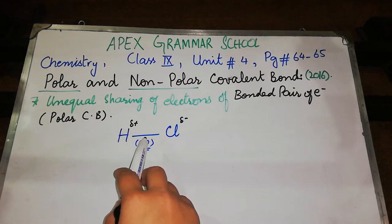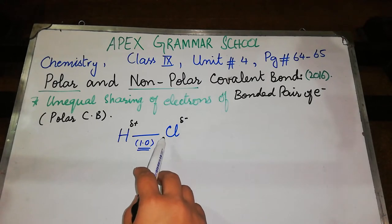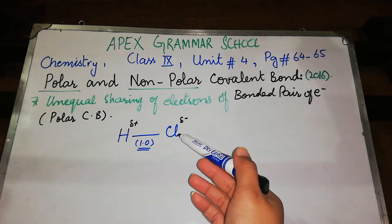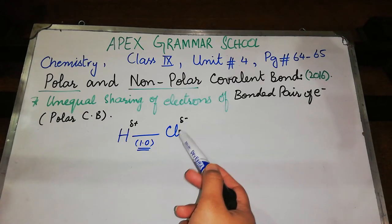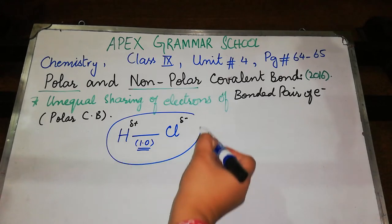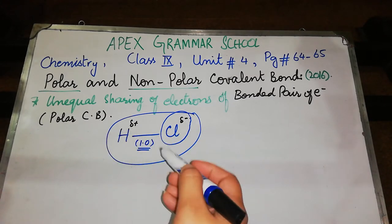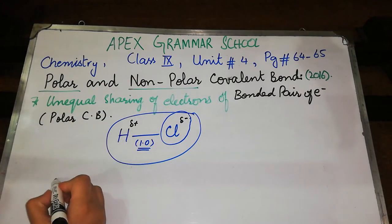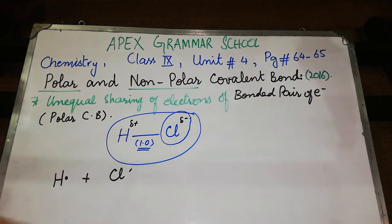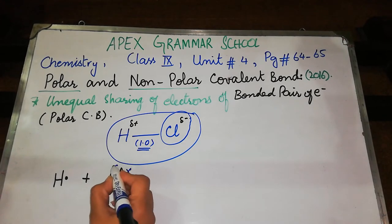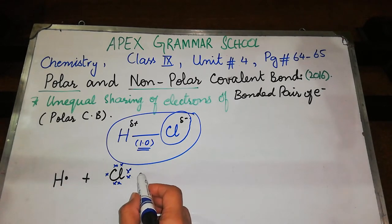As the electronegativity of chlorine is more, it attracts the shared pair of electrons towards itself with a greater force, because it has more valence electrons and more tendency to do so. That's why chlorine attains partial negative charge and creates polarity in the bond — that's why the bond between hydrogen and chlorine is known as a polar covalent bond. In your book, it is shown that hydrogen has one electron and chlorine has seven electrons. To complete its octet, chlorine takes one electron from hydrogen.